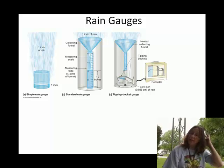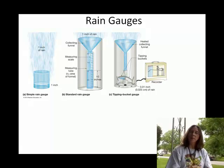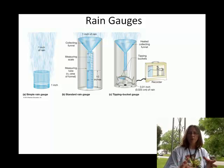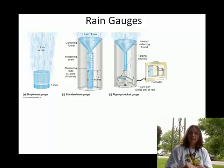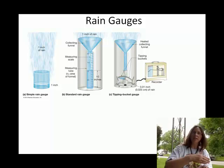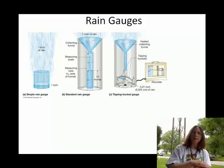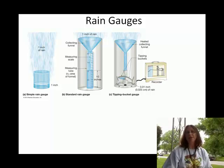Then you can get kind of fancy. The next one is actually a tipping bucket gauge, something like what they have in those automated surface observing systems near airports. Basically what it does is it collects a certain amount of rain — a fraction of an inch — and then it dumps it and records that dump. You can kind of see the recorder over there. Then it collects some more and dumps that, and collects some more and dumps that.